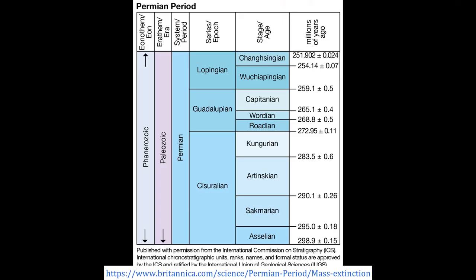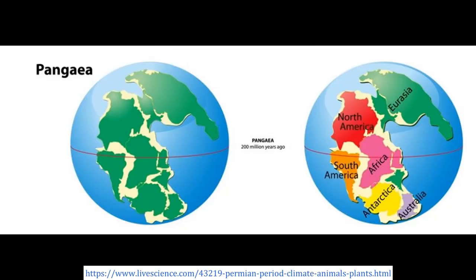The Permian period lasted for 47 million years. It started 298 million years ago and ended 251 million years ago. Early Permian had been marked by the collision of two continents of the Paleozoic era, America and Gondwana. The result was the formation of Pangaea, the supercontinent.